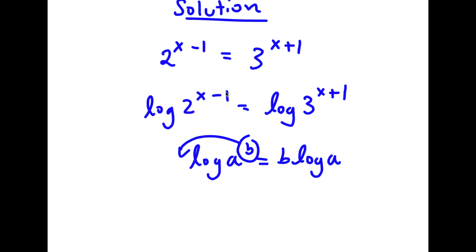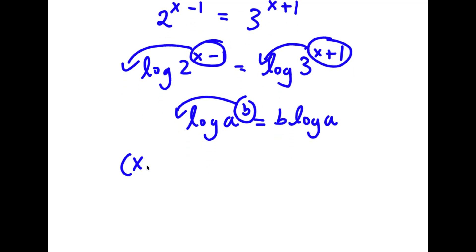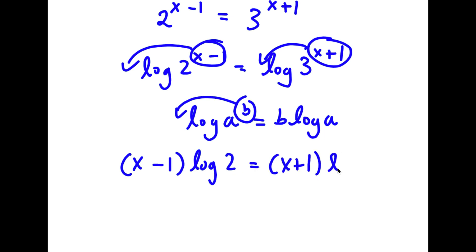So in this case, I have log 2 to the power of x minus 1, and I can move x minus 1 to the front. And log 3 to the power of x plus 1, I can move x plus 1 to the front. So now I have x minus 1 times log 2 is equal to x plus 1 times log 3.